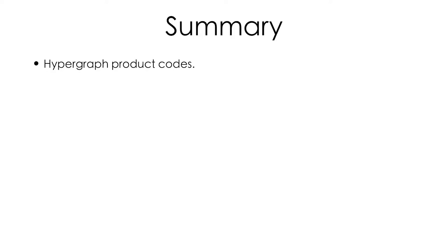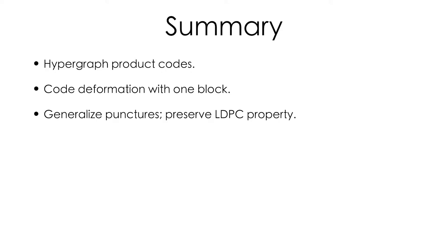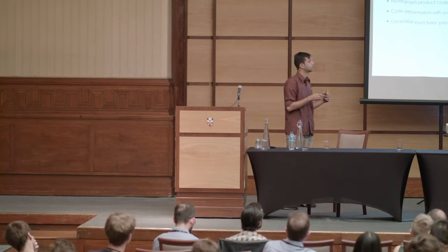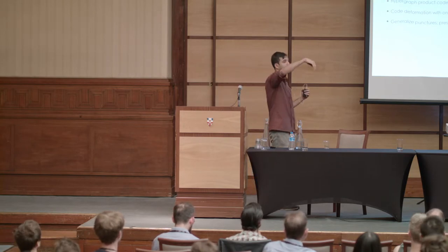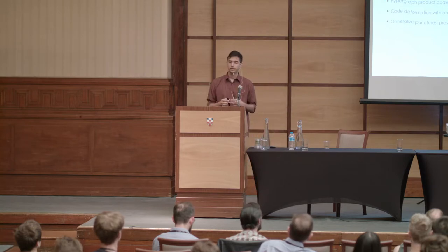To summarize what's coming up: I'm going to be talking about performing gates on hypergraph product codes using a fairly general technique called code deformation. This raises the question — if LDPC codes are hard enough to construct, how do we construct a family of LDPC codes which are somehow adiabatically related to each other, while at the same time preserving the LDPC property? What I'm going to show is that it's possible to generalize defects — specifically punctures — from the study of the surface code. These objects have fairly natural representations in terms of the hypergraph product, and a puncture carves out a certain portion of your code, preserving the LDPC property.